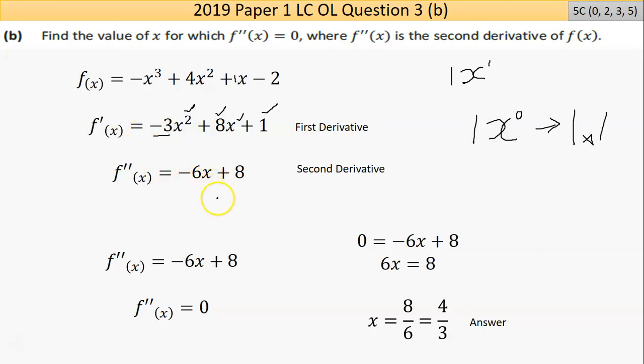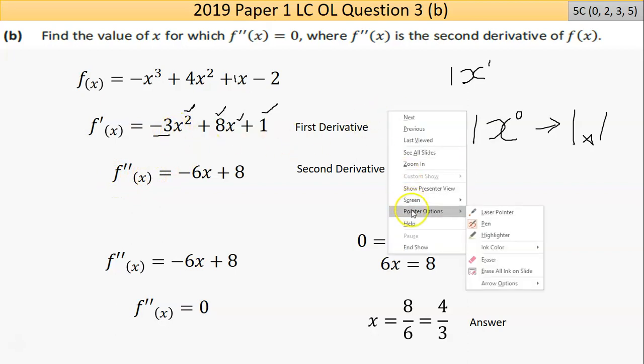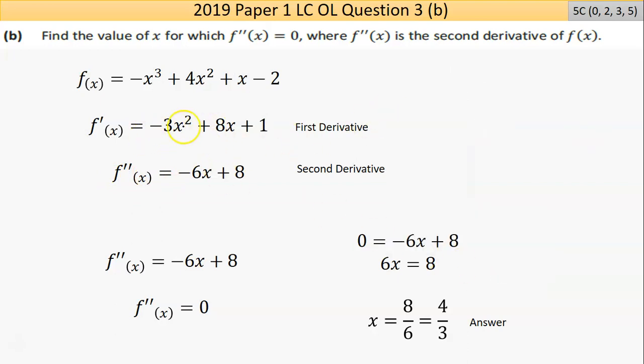Now the second derivative. I'm going to differentiate this again. So do it again. Power by number in front, 2 times negative 3 is the same thing as negative 6. Take 1 from the power - 2 take away 1 is 1. The 8X, the X disappears, you're left with 8. The 1 is a constant, so it turns to 0. So I now have an expression for my second derivative.